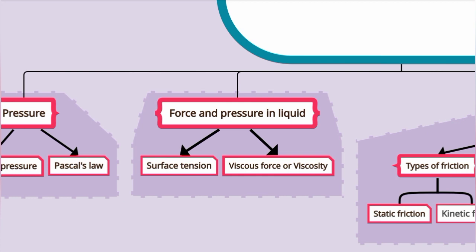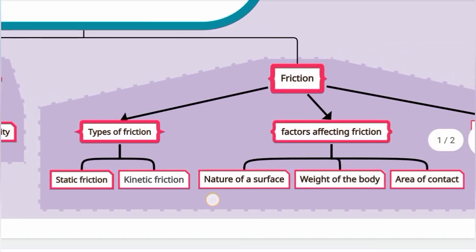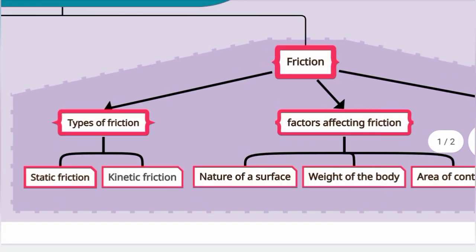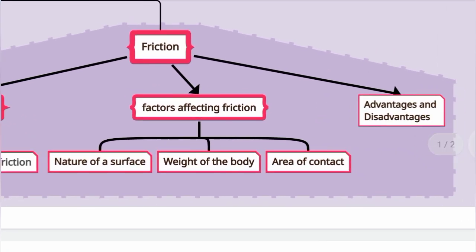Next, friction. Types of friction: static friction and kinetic friction. Factors affecting friction: nature of a surface, weight of the body, area of contact. They have given the advantages of friction and disadvantages of friction. So increasing and decreasing friction — lubricant use, ball bearing use. It is all regarding force and pressure.